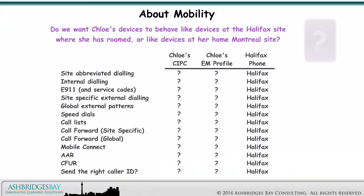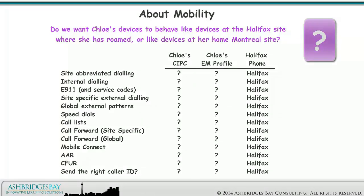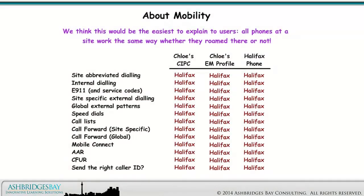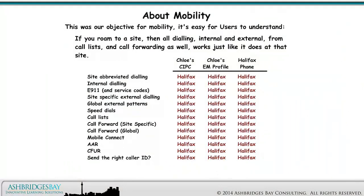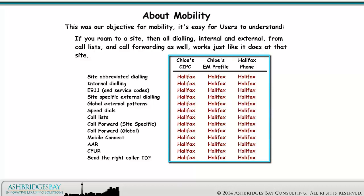Do we want Chloe's devices to behave like devices at the Halifax site where she has roamed, or like devices at her home Montreal site? We think this would be the easiest to explain to users: all phones at a site work the same way, whether they are roamed there or not. This was our objective for mobility — if you roam to a site, then all dialing, internal and external, from call lists, and call forwarding as well, works just like it does at that site.